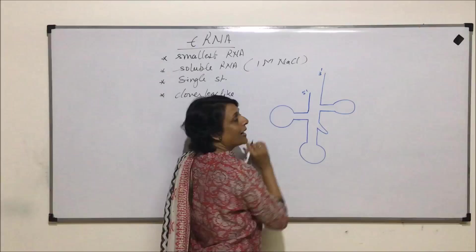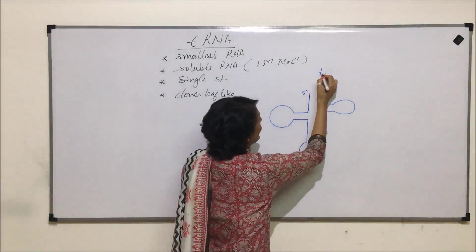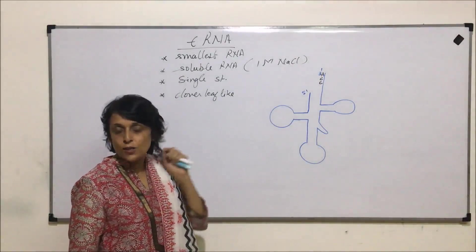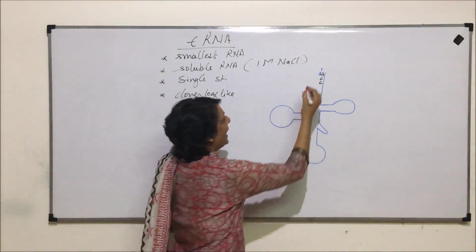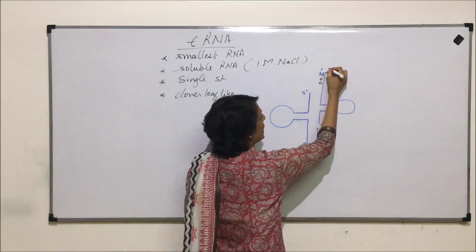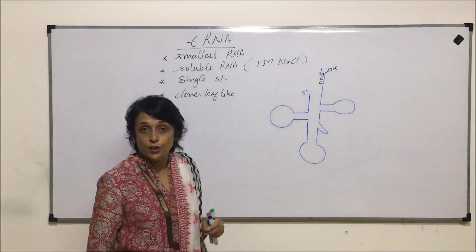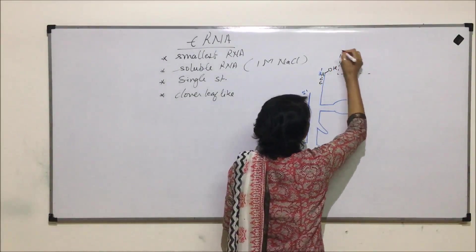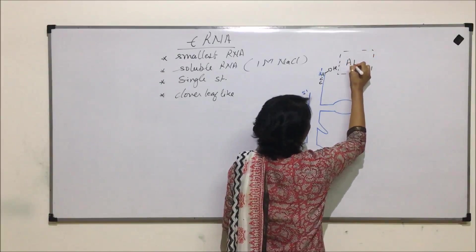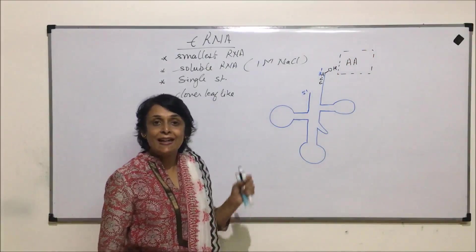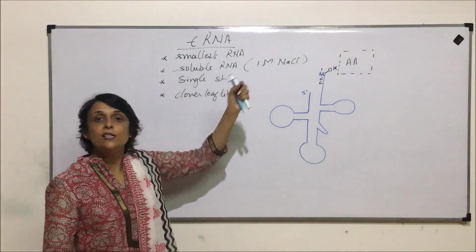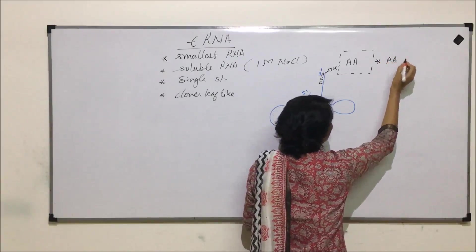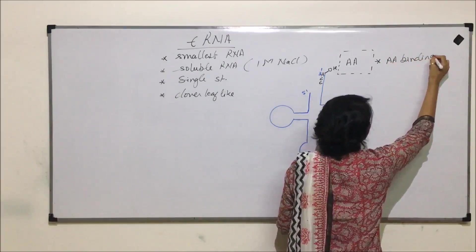On the 3' end, the sequence is always ACC (CCA). On the 3' carbon, the OH group is free — that is the functional group. This is the place where the amino acid is going to come and bind and then be transferred. So this particular position is known as the amino acid binding site.